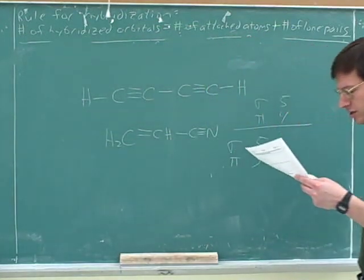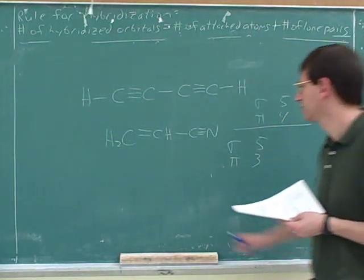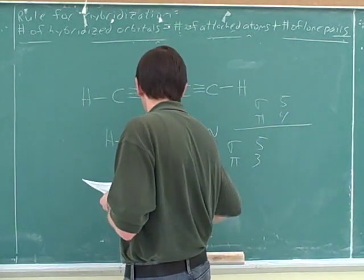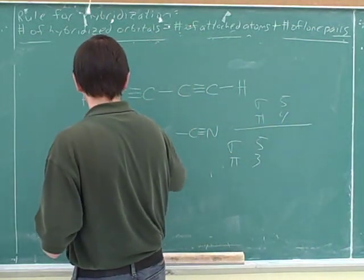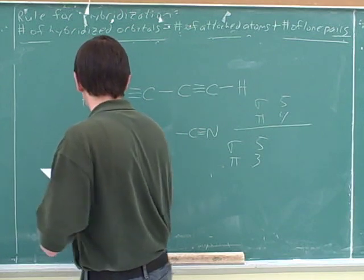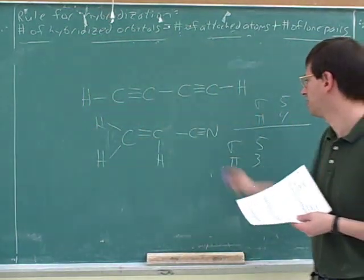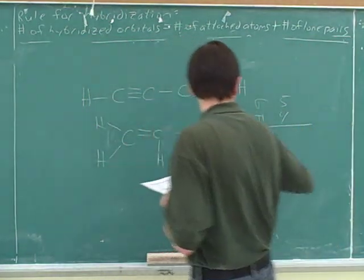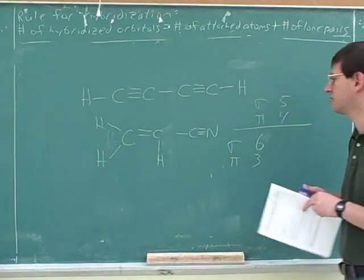Oh, you've got to be careful on that one. Six sigma. So what we should probably do here is actually draw this out. This would be easy to lose some credit on. So what do we decide for the number of sigma bonds? Six. One, two, three, four, five, six. How many pi bonds? Three.